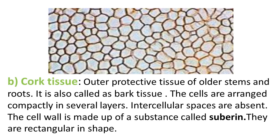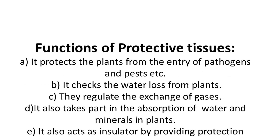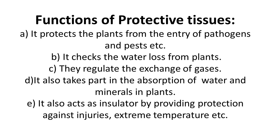Another important protective tissue is bark tissue, also called cork tissue. It is found in the outer layer of old stems and roots. Cells are arranged compactly in several layers with no intercellular spaces, and the cell wall is made up of a substance called suberin. These cells are mostly rectangular in shape. Functions of this protective tissue include: protection of the plant, checking water loss, regulating gas exchange, aiding absorption of water and minerals, and acting as an insulator against injuries and extreme temperatures.